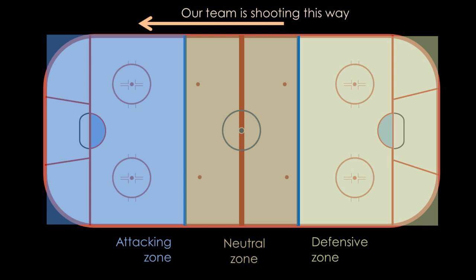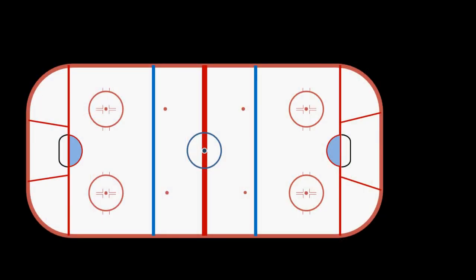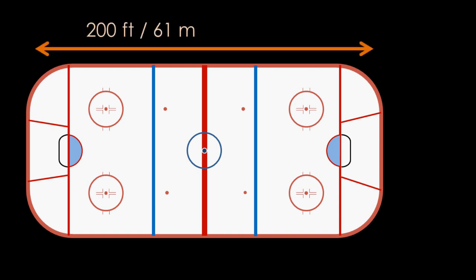To get an idea of the scale — how big is this? In the National Hockey League, or the NHL, which is the highest level of play in the world, the rink is 200 feet long and 85 feet wide. There are a few differences in places other than the United States — usually the rink is a little bit bigger. You can find the exact sizes on Wikipedia or another website.